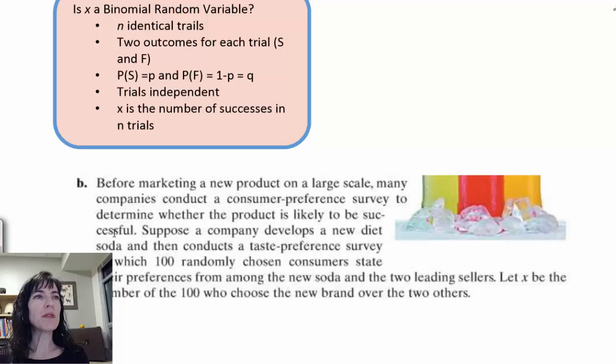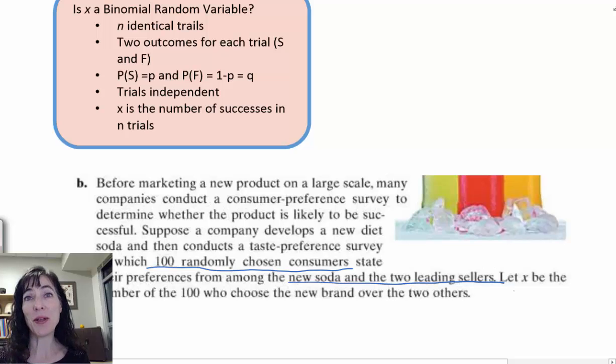Suppose a company develops a new diet soda and then conducts a taste preference survey in which 100 randomly chosen consumers state their preferences from among the new soda and the two leading sellers. So probably Coke and Pepsi, right? Let X be the number of the 100 who choose the new brand over the two others.